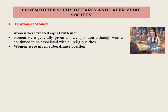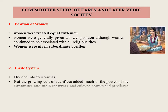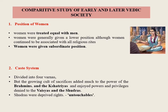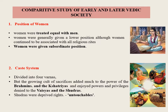Caste system: The later Vedic society was also divided into four Varnas, but the growing cult of sacrifices added much to the power of Brahmins. The Brahmins and Kshatriyas enjoyed powers and privileges denied to Vaishyas and Shudras. Moreover, many other caste groups besides the four major Varnas had come into being. In the words of R.C. Majumdar, we have references to the merchant, the chariot maker, the smith, the carpenter, the tanner, the fisherman, etc. as the names of distinct castes.